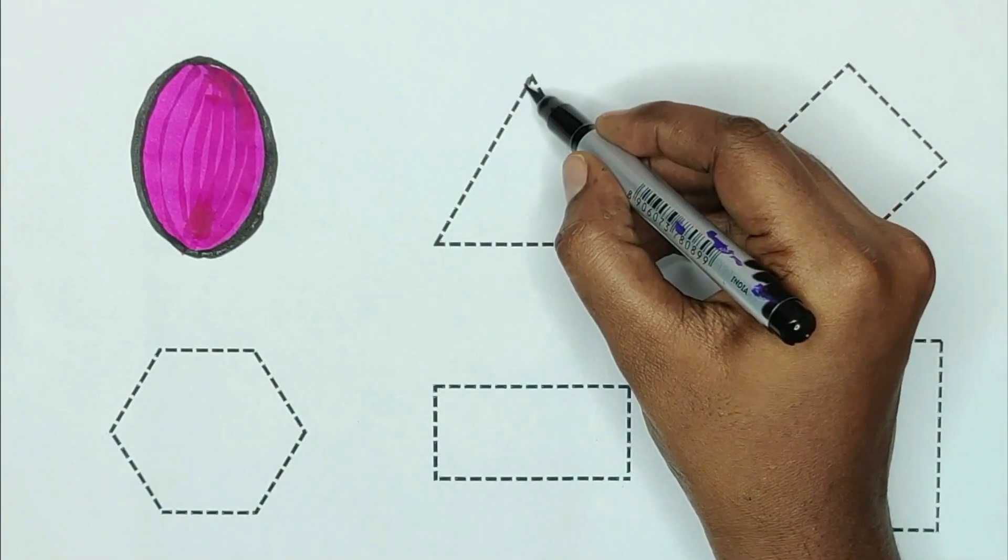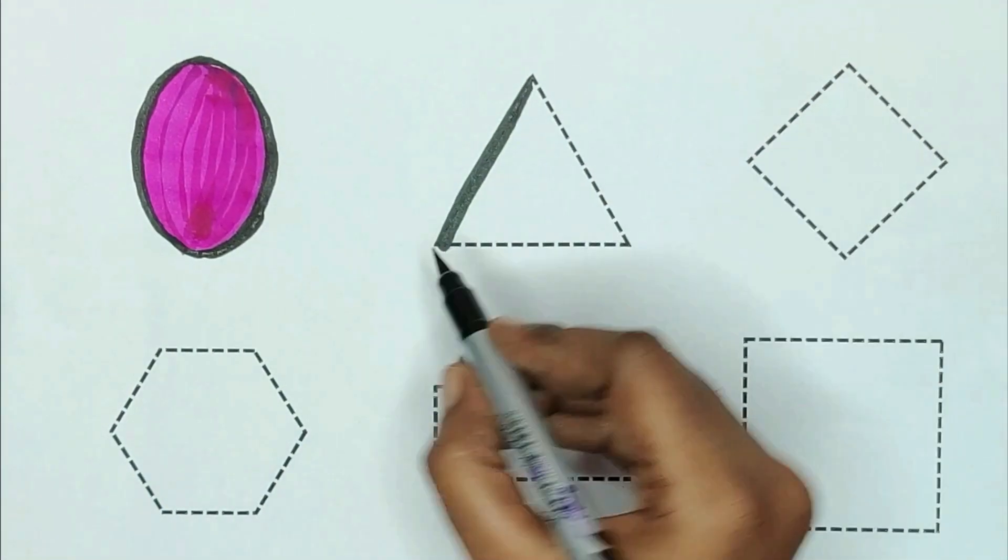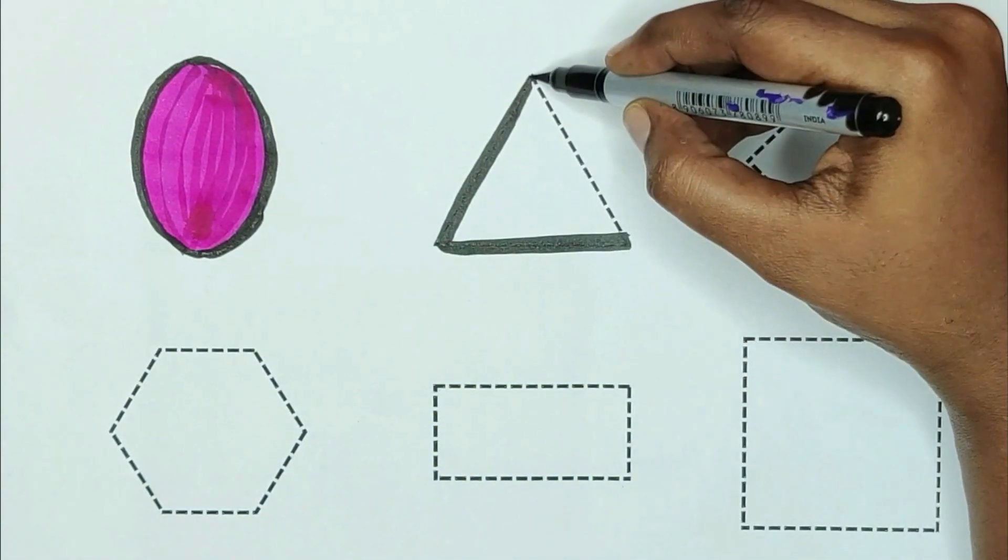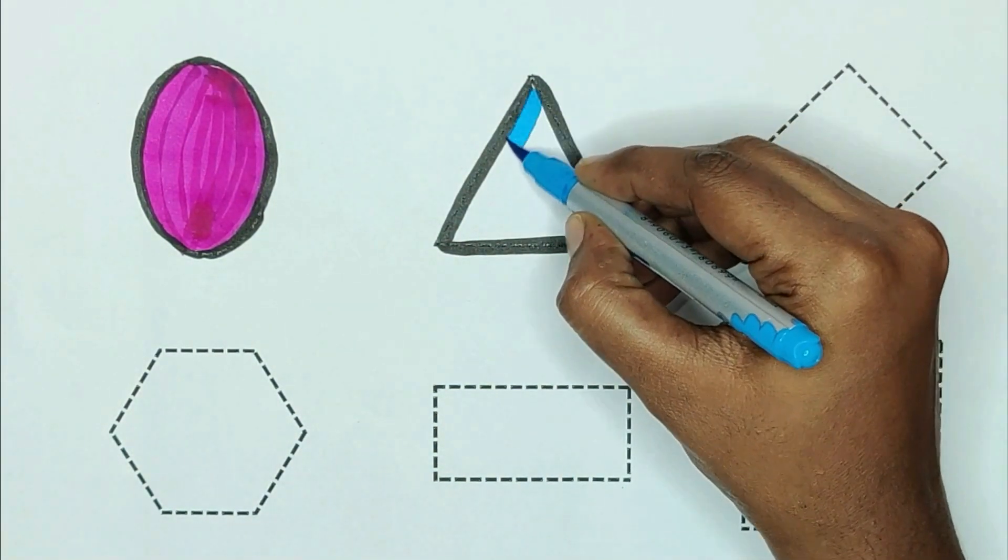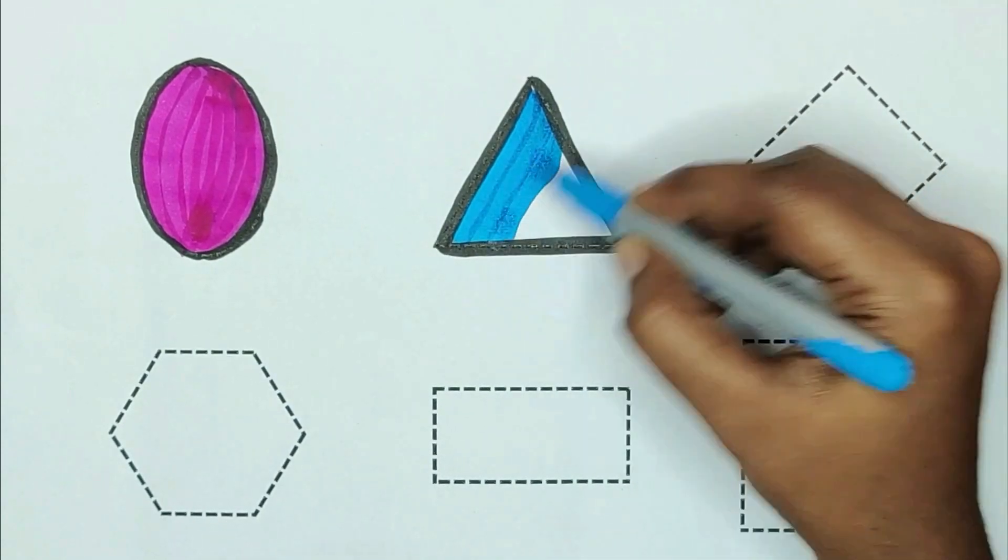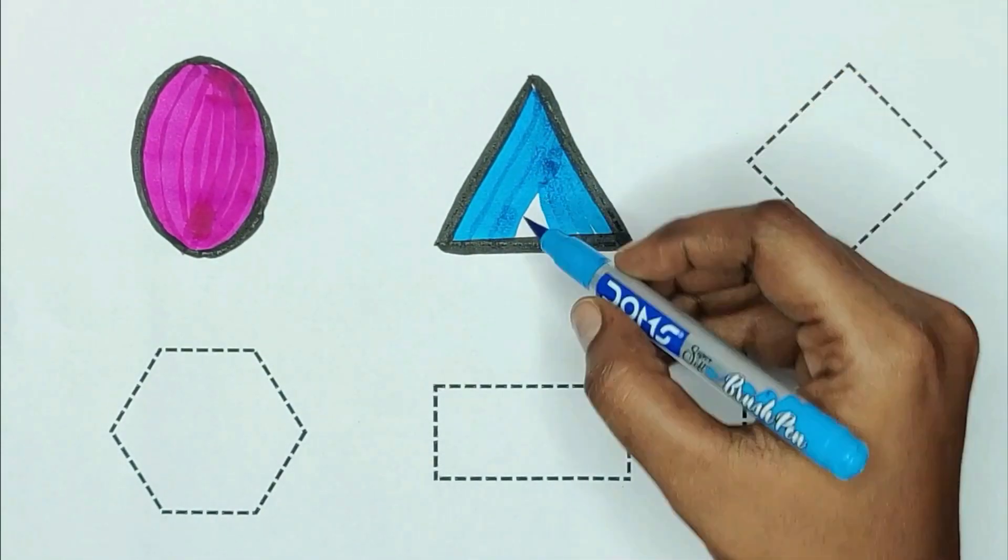Next, triangle. The shape is triangle. Blue color. Blue color triangle.